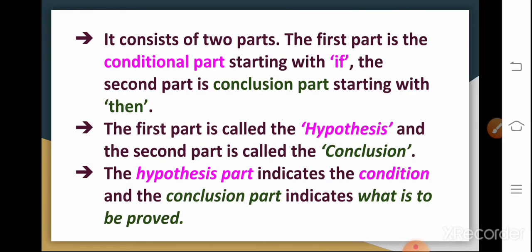It consists of two parts. The first part is the conditional part, starting with if. The second part is the conclusion part, starting with then. You can observe it in different colors. Condition part is in pink color. The conclusion part is in green color. The first part is called the hypothesis, and the second part is called the conclusion. The hypothesis part indicates the condition, and the conclusion part indicates what is to be proved.